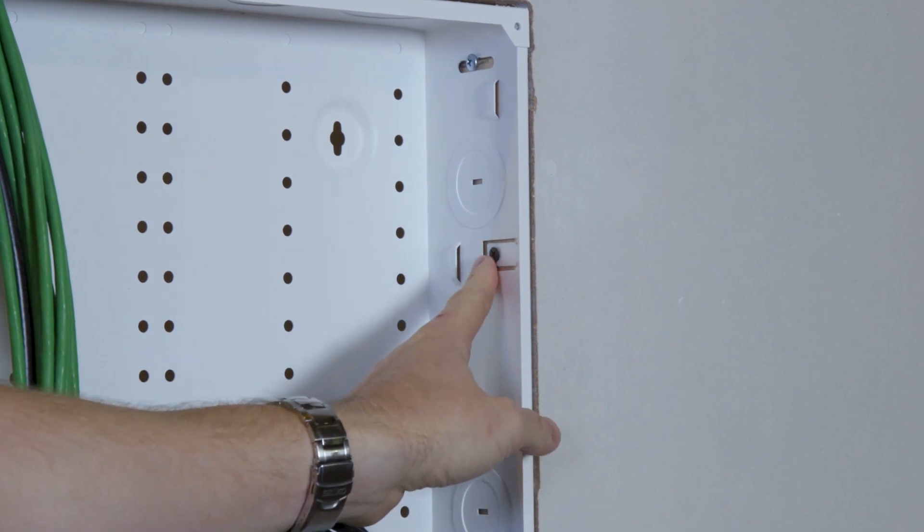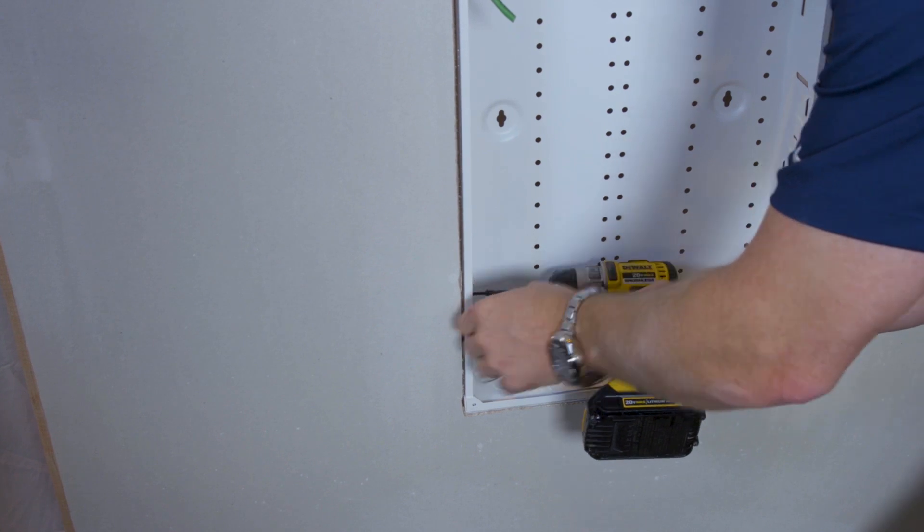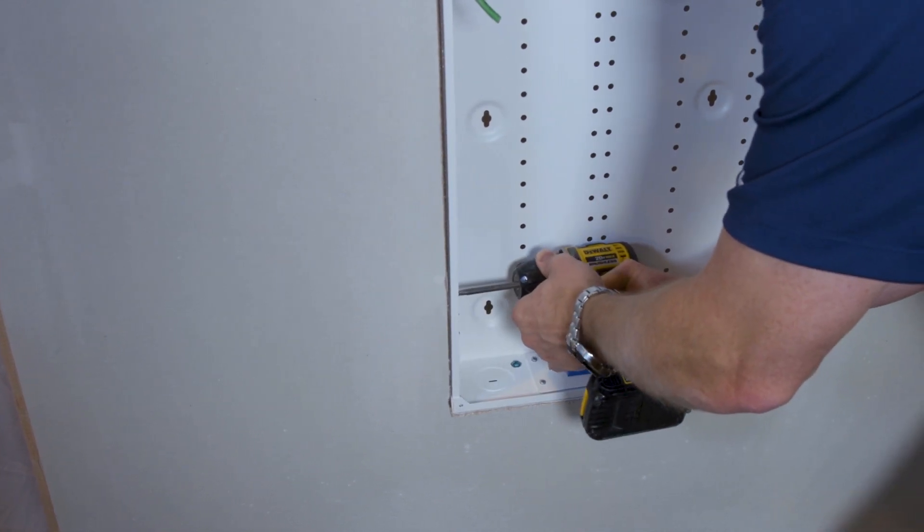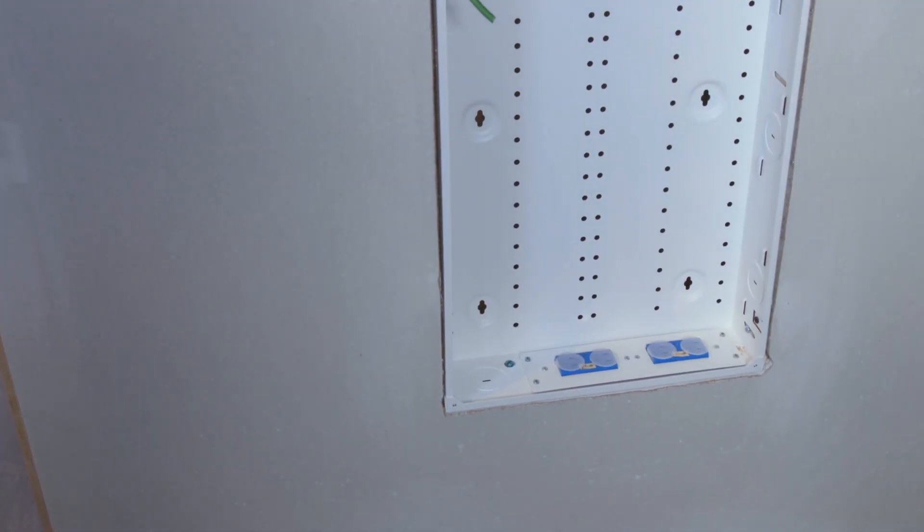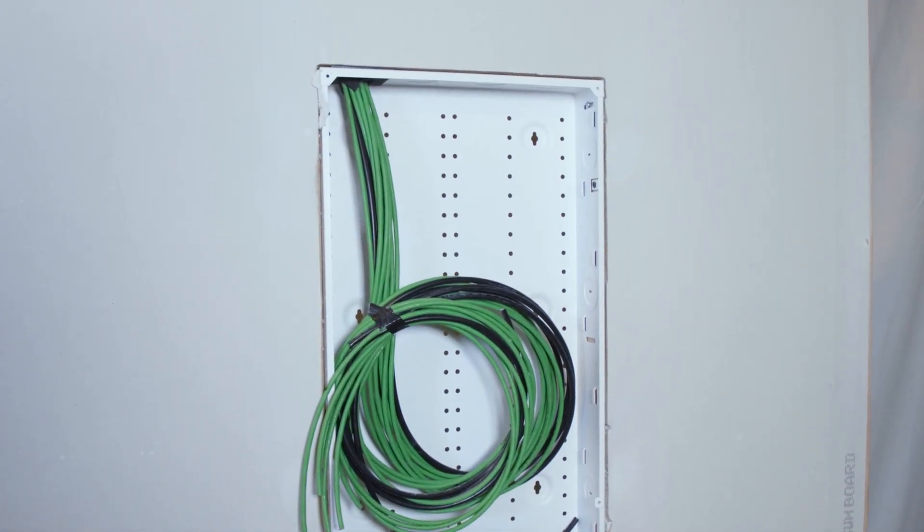And by letting it sink in like this, it doesn't warp the side of our box. There we go. So that will lock the box in place and keep it from moving in the future so the enclosure is nice and secure now.